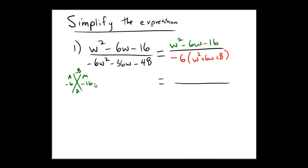Because negative 8 times 2 is negative 16, negative 8 plus 2 is negative 6. Therefore, the numerator in factored form would be (w - 8)(w + 2).